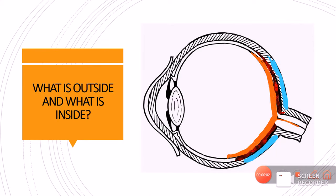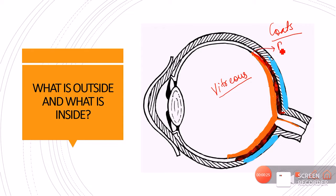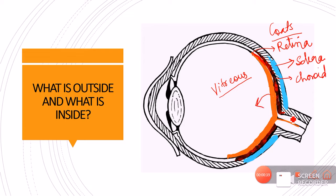In order to understand the 10 layers of retina, we must have a good understanding of what is meant by the inside and what is meant by the outside. The vitreous cavity is present inside the eyeball, and covering the eyeball we have the coats of the eye. The retina is the innermost coat of the eyeball, the sclera is the outermost coat, and in between we have the choroid. Anything towards the sclera is the outermost structure.